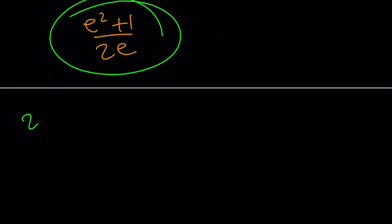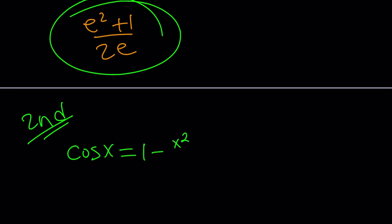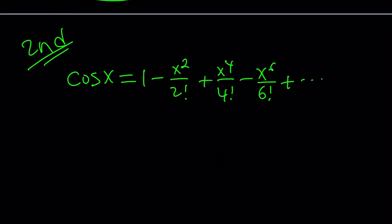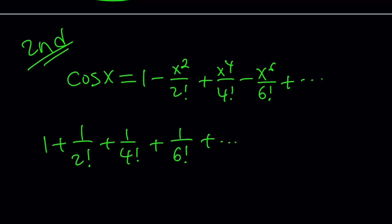Let's talk about the second method. It's a little different — they are related, but use a different idea — and we're going to take advantage of Taylor series again. Consider the series for cosine: 1 minus x squared over 2 factorial plus x to the fourth over 4 factorial minus x to the sixth over 6 factorial, and so on. It's an alternating series where the signs alternate. We're looking for a sum with no negatives, so the question is: can we fix the negatives? Of course — that's what math is for.